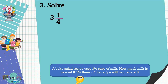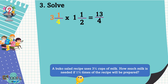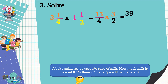Three and one-fourth times one and one-half. Let's change three and one-fourth into an improper fraction: three times four equals twelve, plus one equals thirteen — copy the denominator four. Change one and one-half into an improper fraction: one times two equals two, plus one equals three — copy the denominator two.